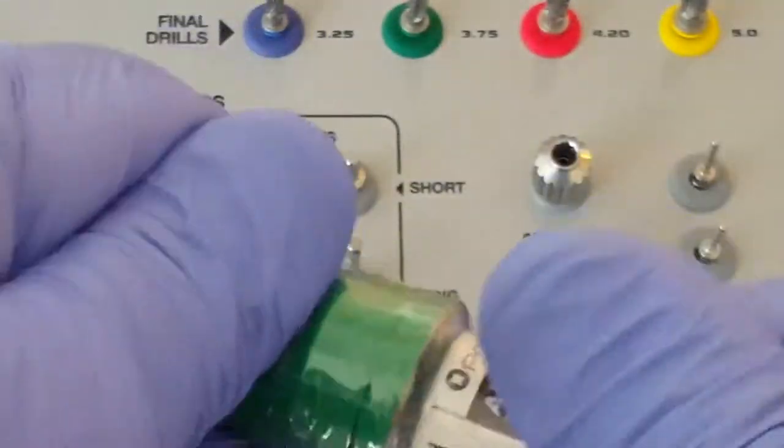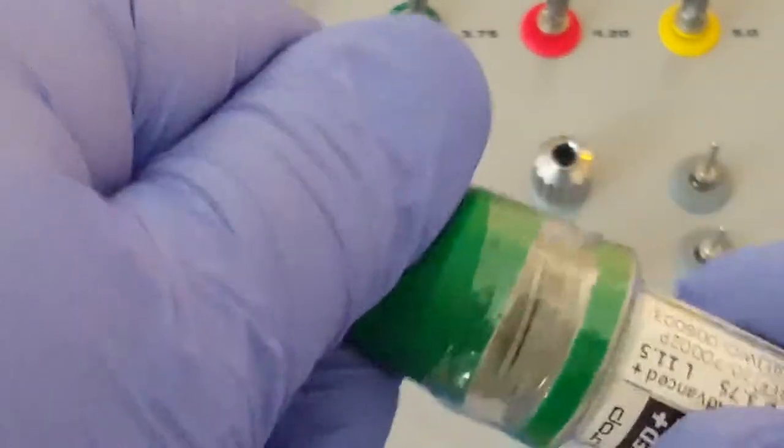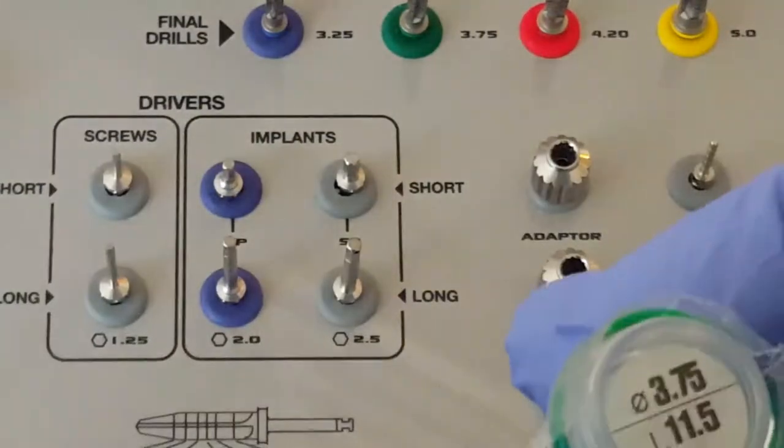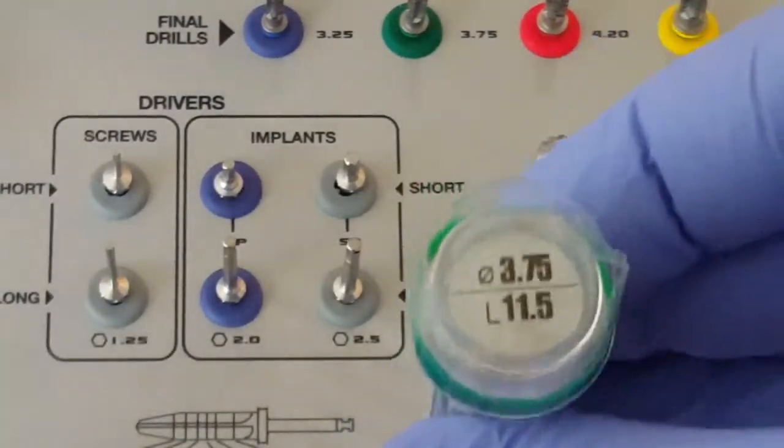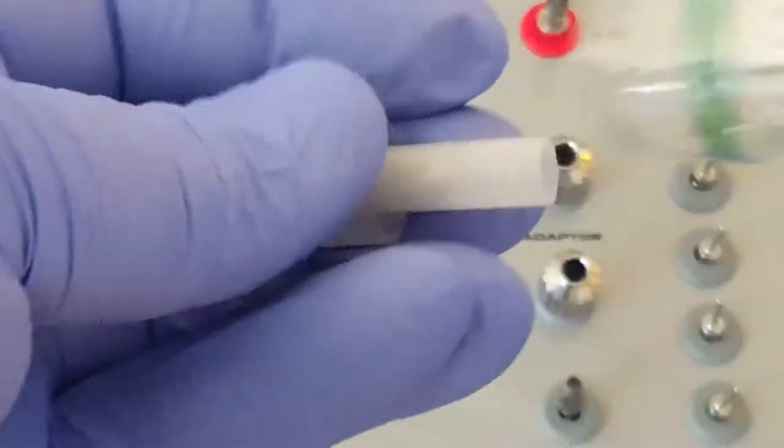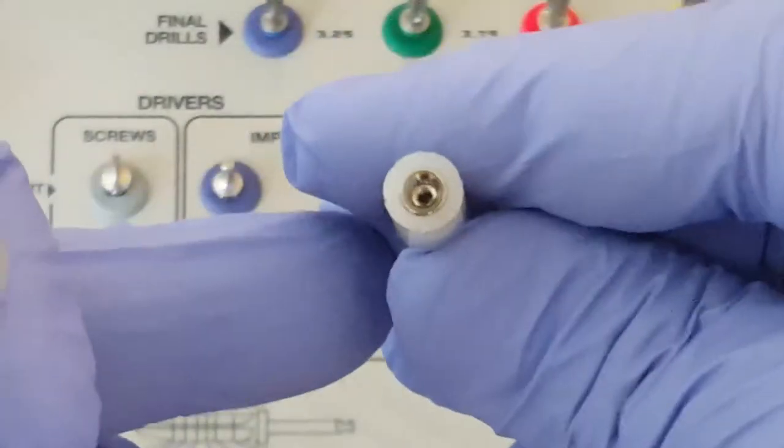We open the vial by twisting, easily done by the doctor or the assistant. There's a second vial also labeled inside. We take the implant out. Inside it is encased in titanium.